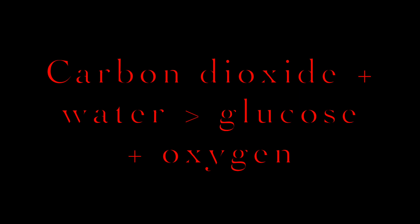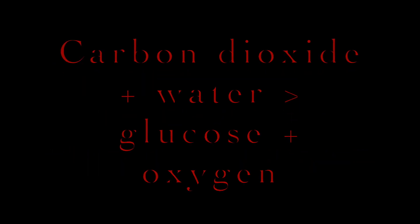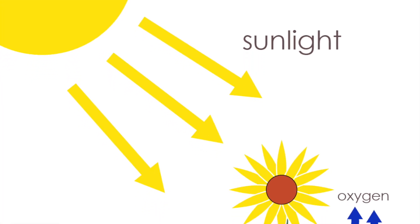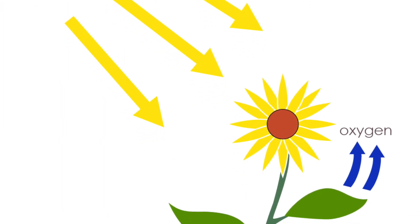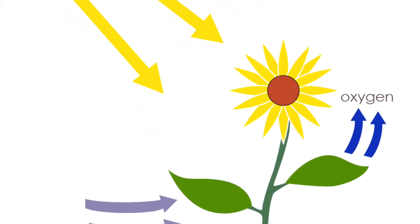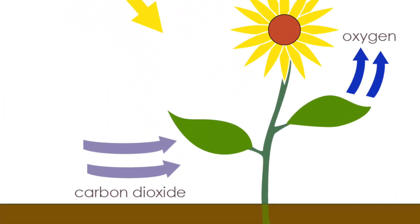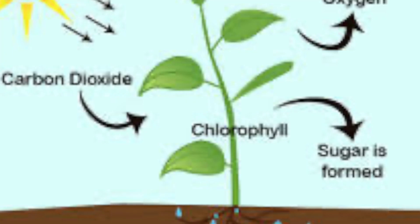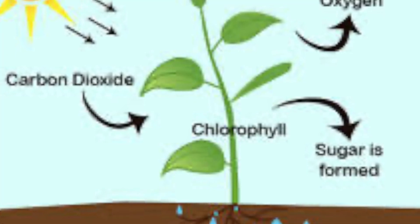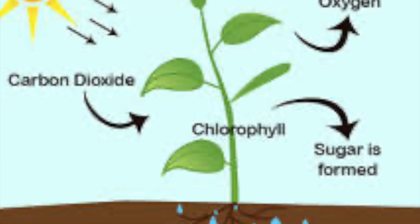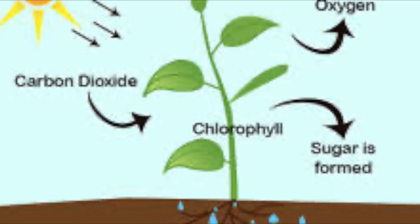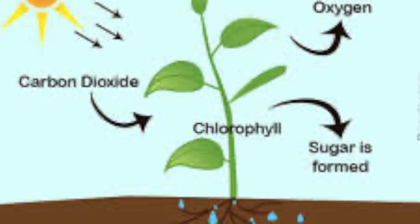Photosynthesis is an endothermic reaction which means that it needs an input of energy from the environment. The cells in plants contain chloroplasts which is where photosynthesis actually takes place. In chloroplasts there is chlorophyll, and the light is absorbed by the chlorophyll before it is used to convert carbon dioxide and water into glucose and oxygen.